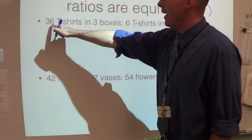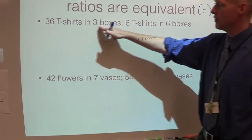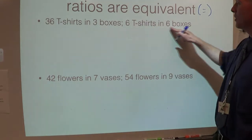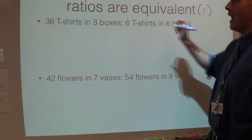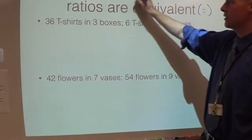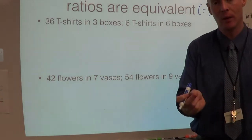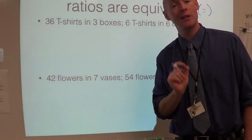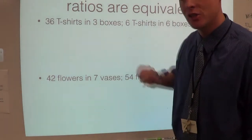Here I have two different ratios: 36 t-shirts in three boxes, and six t-shirts in six boxes. We're going to use unit rates to see if they are equal. Remember, unit rates are always over one. So let's check it out.